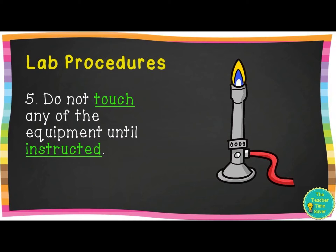Number five: do not touch any of the equipment until instructed. I know a lot of kids are going to be excited to play with the stuff to make the crystals, but that's not allowed. You have to wait until we're actually doing the experiment, because you could be spilling things. In some labs there's a Bunsen burner — a device used to heat up chemicals — but that's too dangerous for middle school right now, and in any case, don't touch any equipment until it's time.